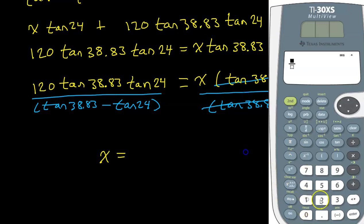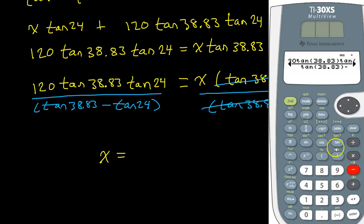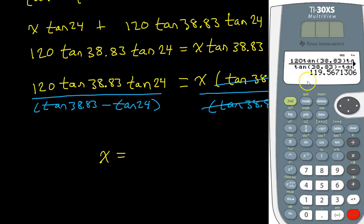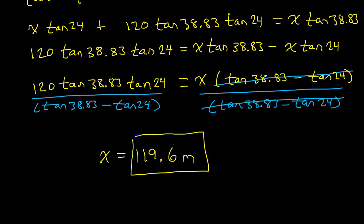In the numerator we have 120 times the tangent of 38.83 times the tangent of 24. In the denominator we have the tangent of 38.83 minus the tangent of 24. This is the final answer. I'm going to round this to 119.6, and the units were in meters. So the Statue of Liberty is approximately 119.6 meters tall according to this problem.